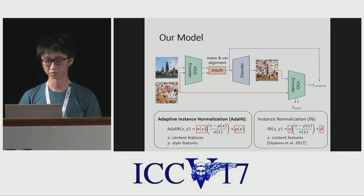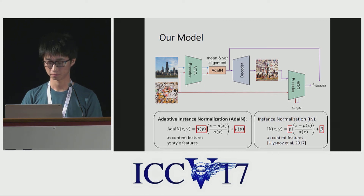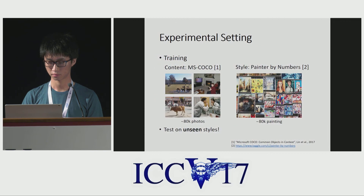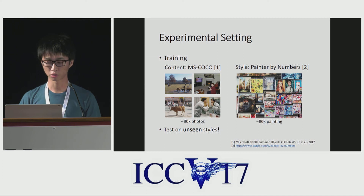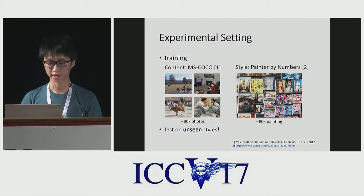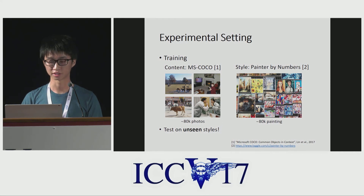We compute the content and style loss to train the decoder. We use two datasets in our experiment: Microsoft COCO for content images and Painter by Numbers for style images. Each dataset contains roughly 80,000 training images. We train our network on content and style pairs randomly picked from each dataset. At test time, we evaluate our model on novel styles.